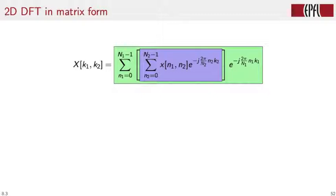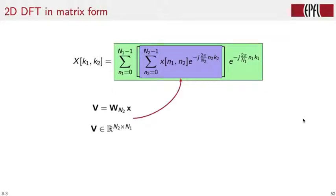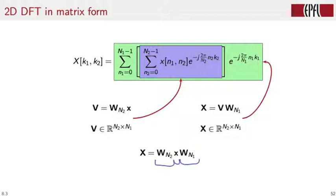let's look at the DFT formula once again. Then the inner summation is simply the product of the DFT matrix of size big N2 times the signal matrix. We call this intermediary matrix capital V, and capital V belongs to the space of N2 times N1 matrices. Then the outer sum can be expressed, the right product of the matrix V we just defined, times the DFT matrix of size capital N1. And so the resultant signal is a matrix that collects the DFT values for the image. In compact form, we can express the two-dimensional DFT as the product of a DFT matrix of size N2 times the image times a DFT matrix of size N1.